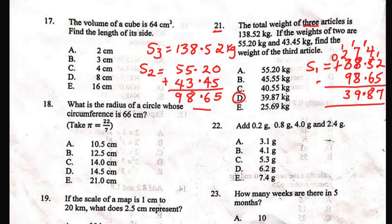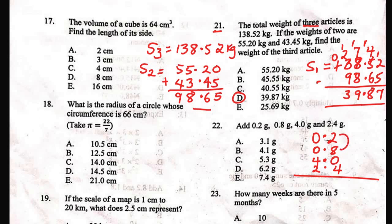Question 22. We have decimals: 0.2 plus 0.8 plus 4.0, then 2.4. Let's add this together. 8 plus 2 is 10, plus 4 is 14. Put the 4 and move the 1. 4 plus 2 is 6 plus the 1 is 7. So our answer is 7.4 grams, which is option E.